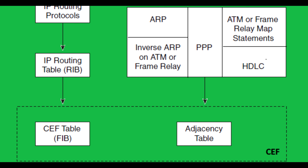Cisco Express Forwarding, CEF, is a high-performance, layer-3 IP switching technology used in Cisco routers to enhance packet switching efficiency. CEF relies on both the Routing Information Base, RIB, and the Forwarding Information Base, FIB, to optimize the forwarding of packets.